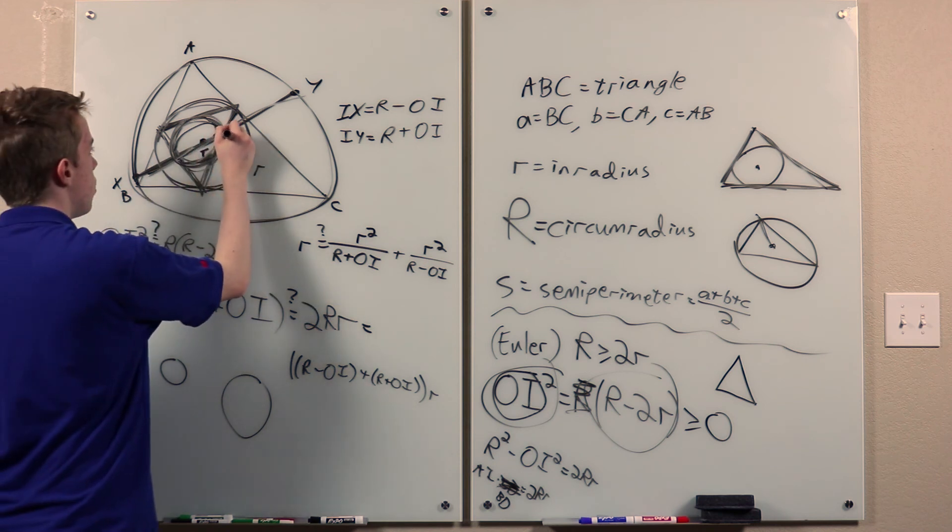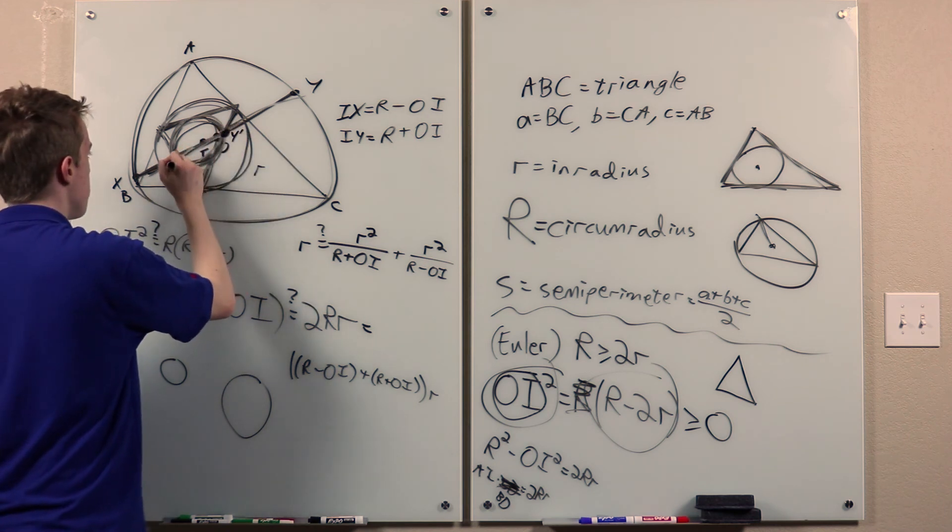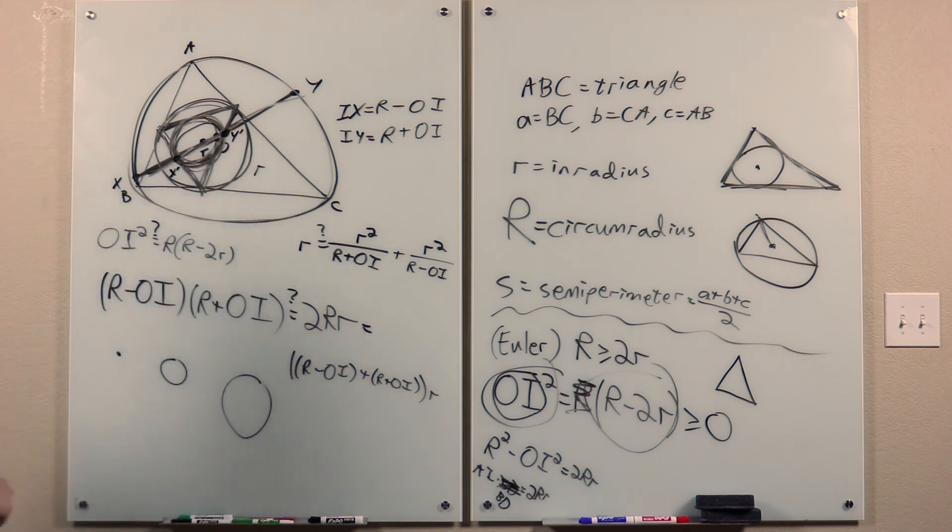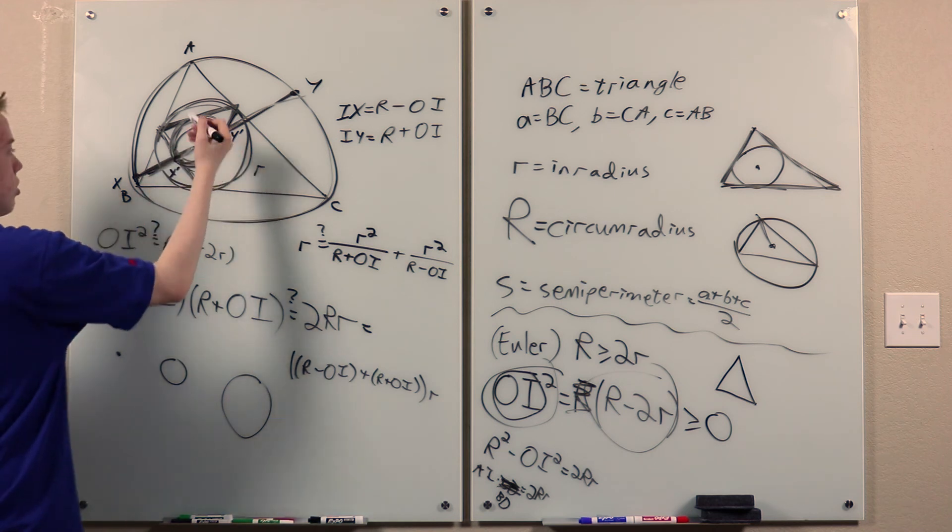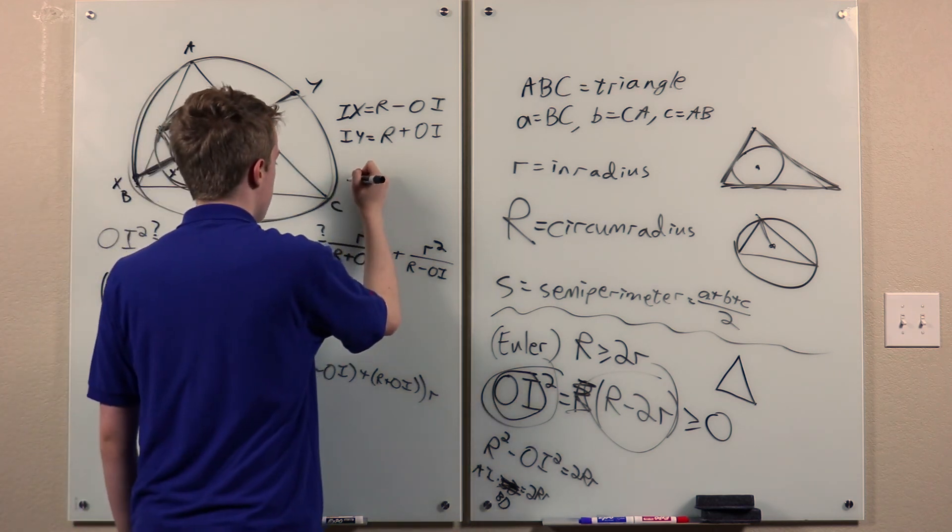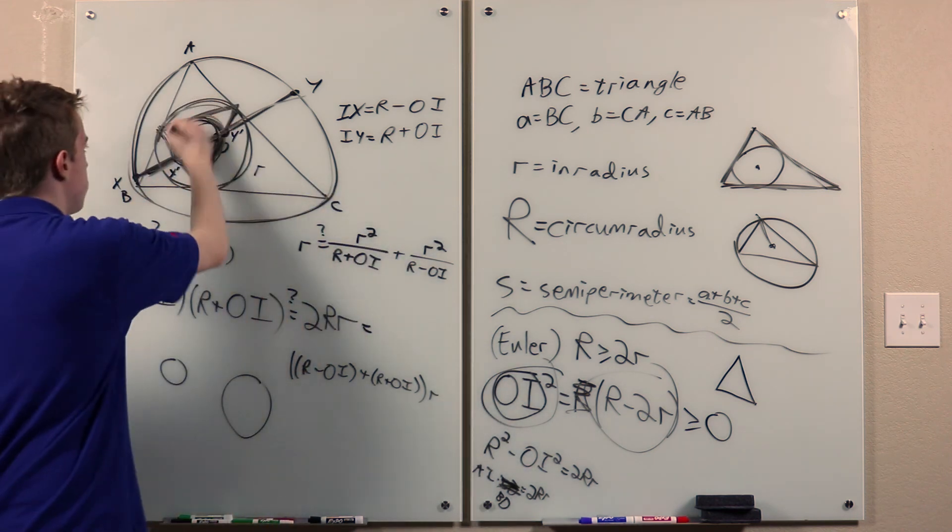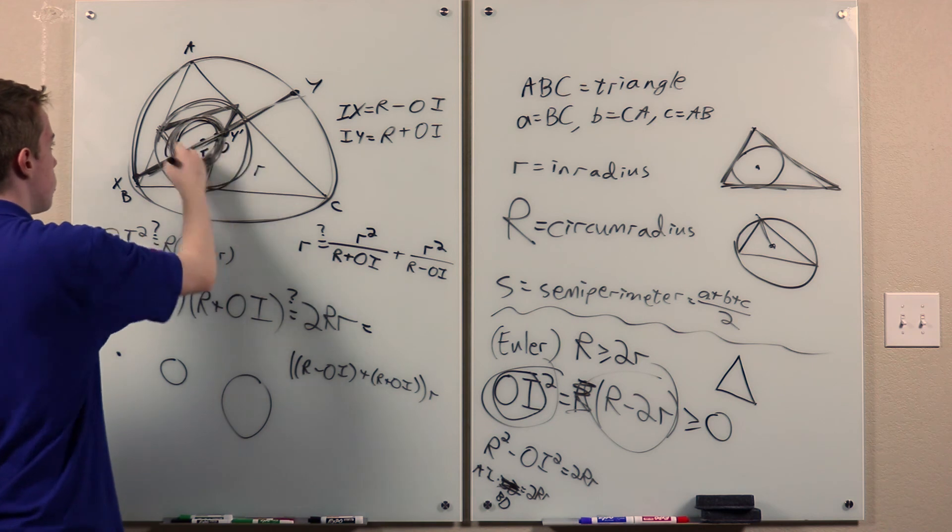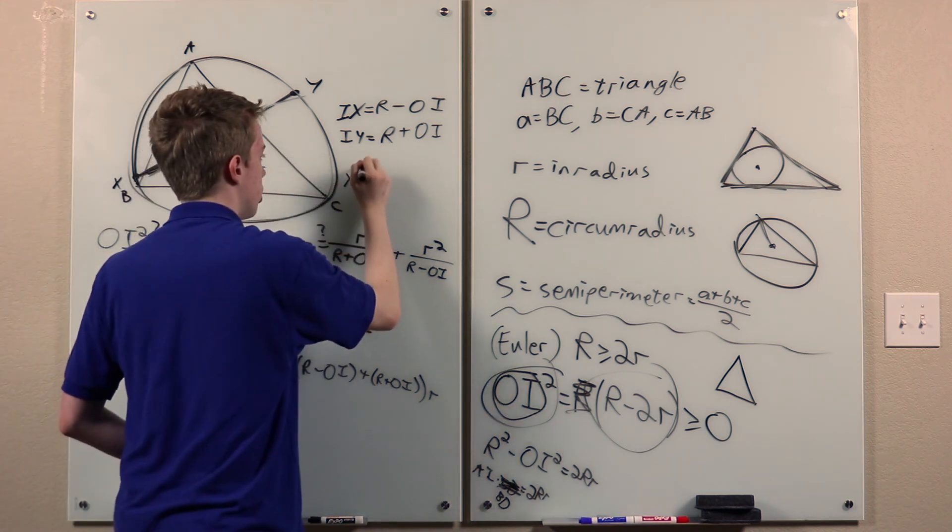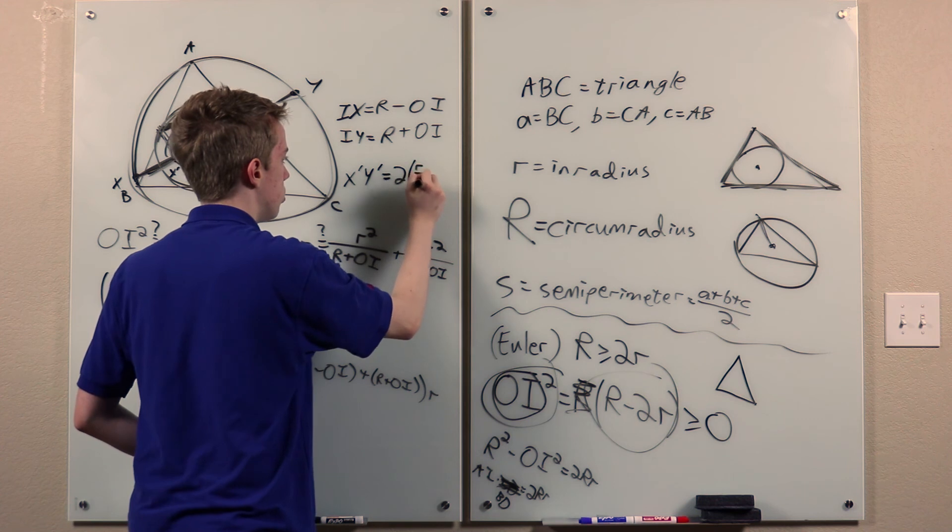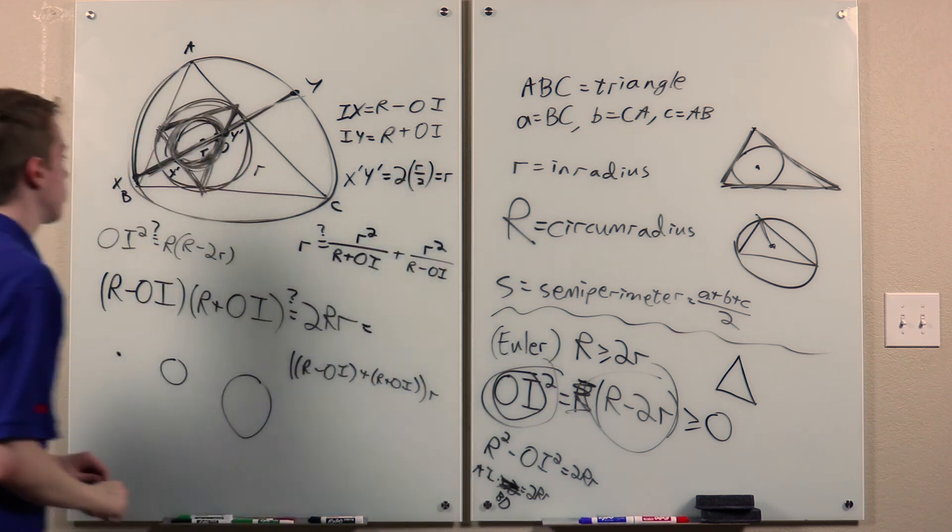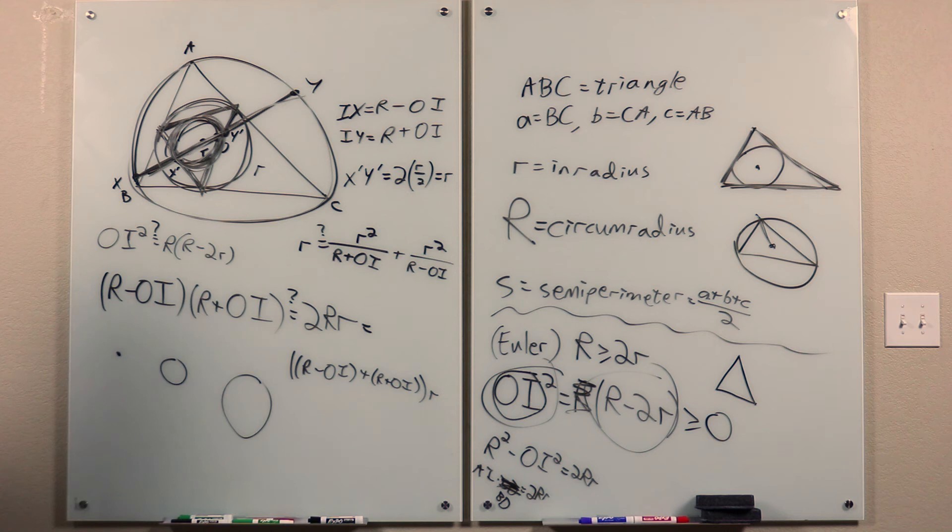Now, look at the images of X and Y. Call them X prime and Y prime. Then XY passes through the center of this circle, because it lies on this line. So X'Y' is a diameter of the circle. So its length is twice the radius, which is two times little r over two, which is r.